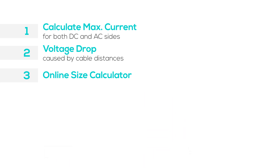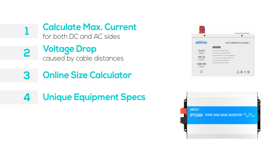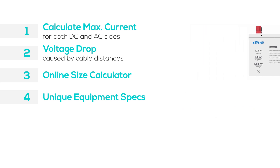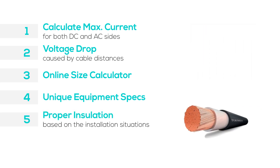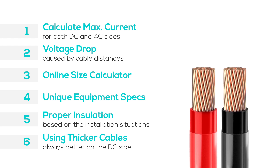Think about equipment — be sure to consider the unique requirements of your inverter and battery. When selecting insulation, account for environmental factors such as needing UV resistance, and always adhere to local regulations. A useful tip: thicker cables on the DC side usually perform better. For the AC side, the optimal choice may vary based on the number of inverters and their configuration.